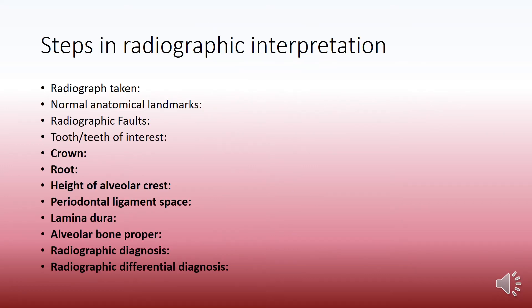The steps in radiographic interpretation would be the same as usual. First of all the radiograph taken, normal anatomical landmarks, faults if any, the tooth or teeth of interest, crown, root, and height of alveolar crest.